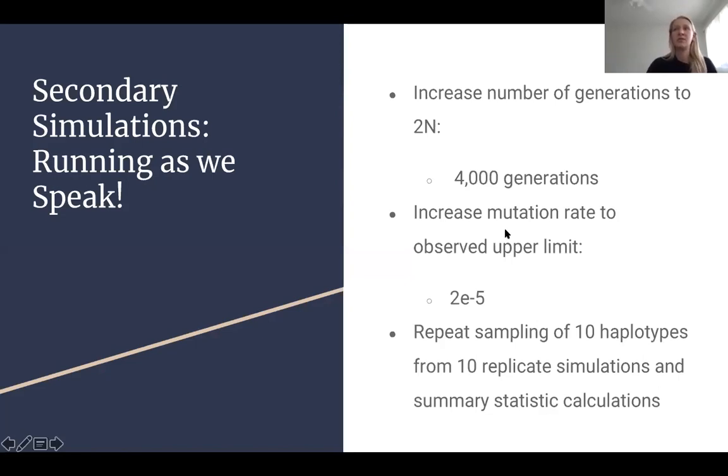That led me to the secondary simulations, which are running as we speak. I've been having some cluster problems, they've been switching nodes around and stuff, but they're up and running right now. The goal of these simulations was to more closely resemble the genetic landscape of the Pacific oyster. In order to do this, we increase the number of generations to 2n, which is a pretty common thing to do with your simulation. So instead of running it for 500 generations like I did in the first simulations, now we're going to run them for 4,000 generations and see if we can hone in on some of that variation. Also, I increased the mutation rate to the observed upper limit of 2 to the minus 5 instead of just 1 to the minus 5,